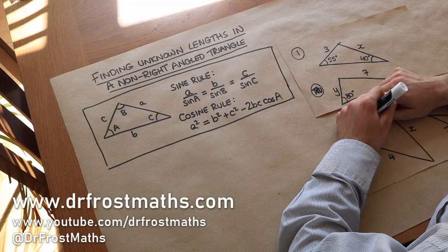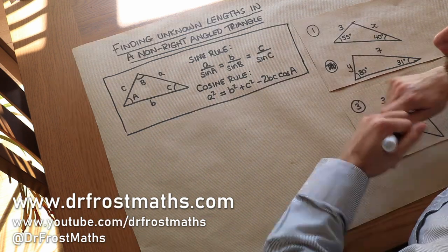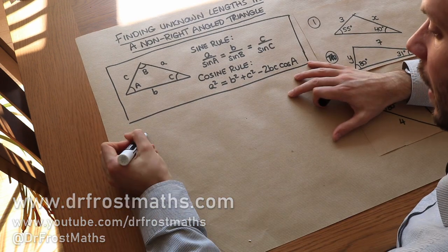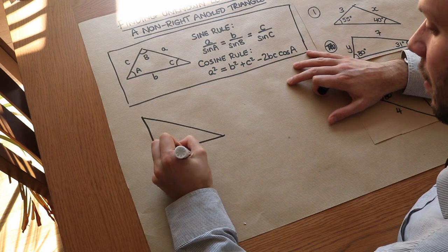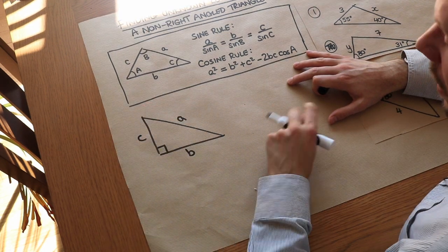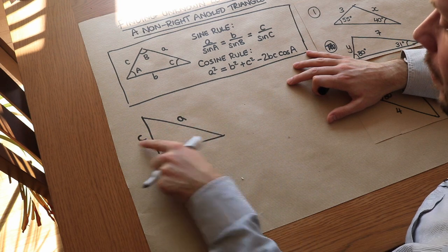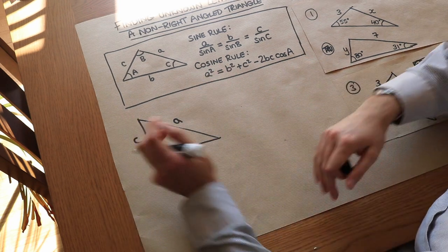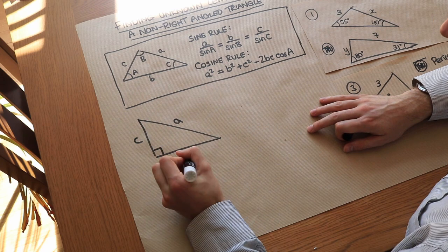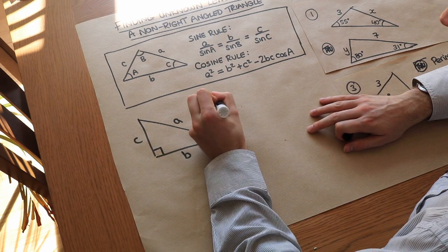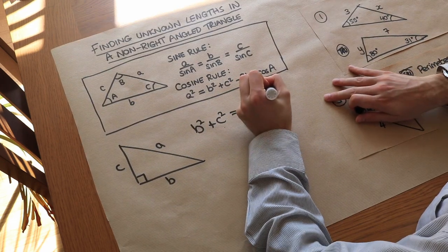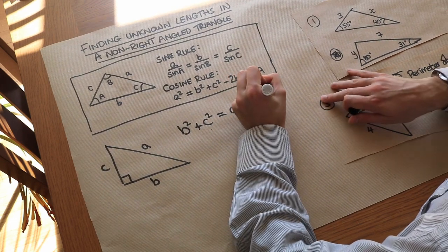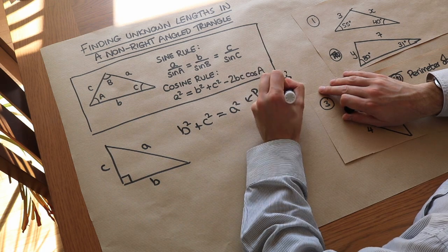Hello and welcome to this video on finding unknown lengths in a non-right-angled triangle. If it was a right-angled triangle — let's say I had this triangle here with lengths b, c, and a — and I wanted to find one length given the other two, we would use Pythagoras' theorem: b squared plus c squared equals the hypotenuse squared. But Pythagoras only works when we have a right-angled triangle.